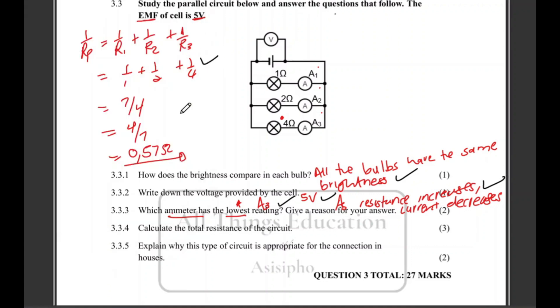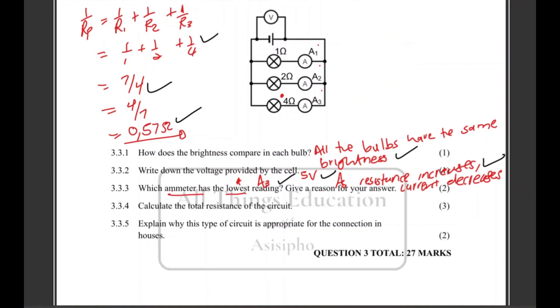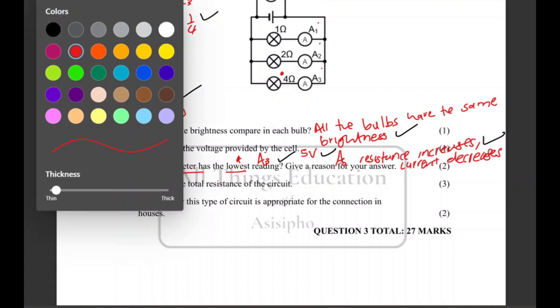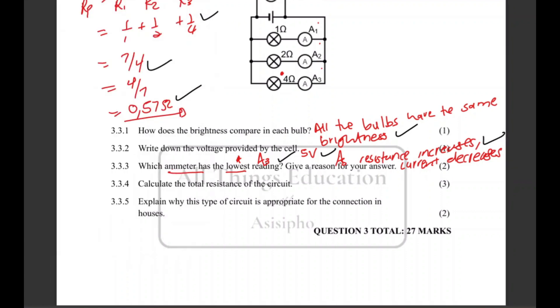Explain why this type of circuit is appropriate for the connection in houses. Now this type of connection is appropriate because if one bulb goes out, the others will still work, the other bulbs will still work or will remain on.